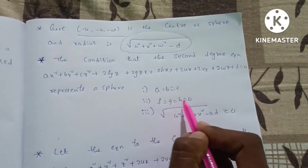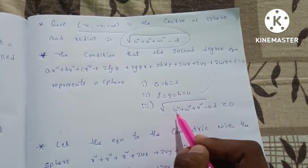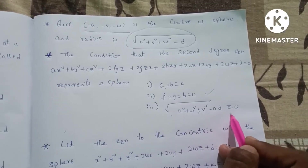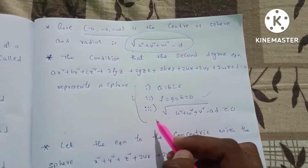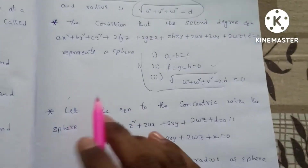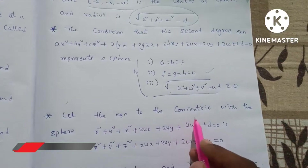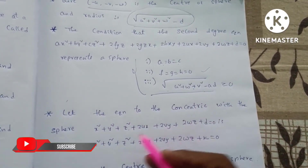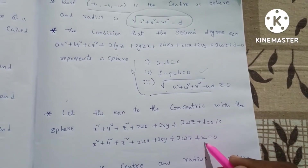Next, the conditions: f equals g equals h equals 0. Next, root over (u square plus v square plus w square minus d) must be greater than or equal to 0. These three conditions do not change the second degree equation. Next point: if you want a sphere concentric with another sphere, then d is replaced by k.